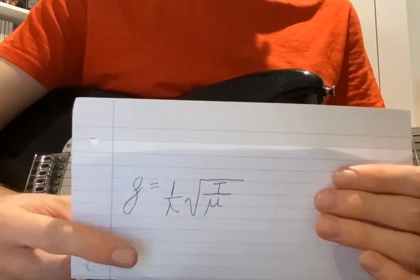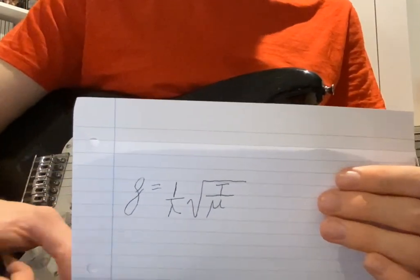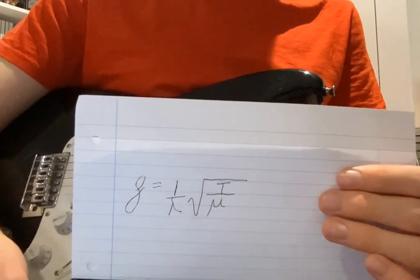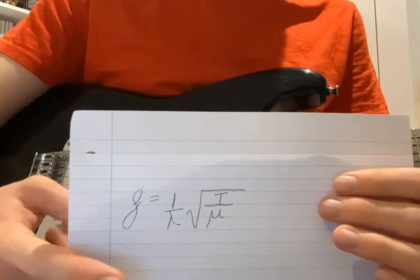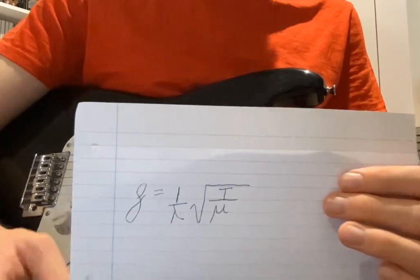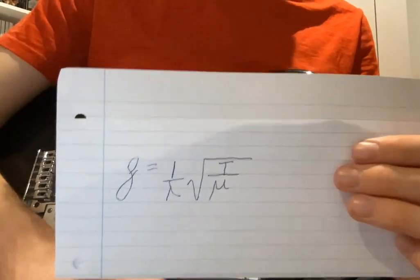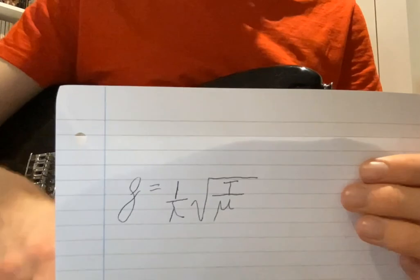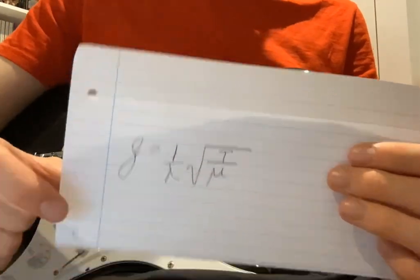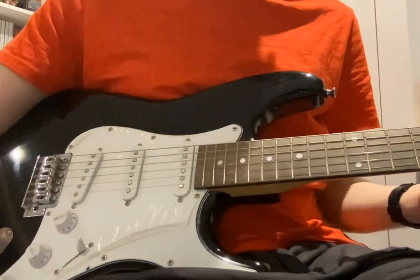F equals one over lambda times the square root of T over mu. We'll first look at the one over lambda. So lambda is of course the wavelength. And as we decrease the wavelength, we increase the frequency, so we increase the pitch.